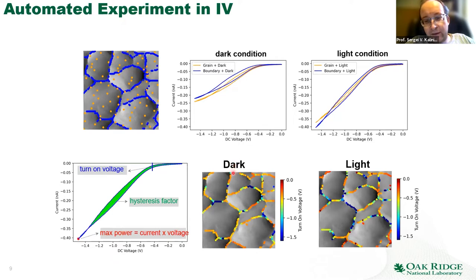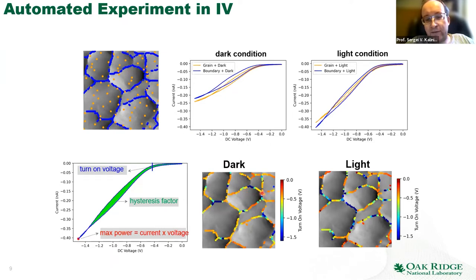Then we can see interesting things. If we look at quantities like turn-on voltage or hysteresis and plot their distribution across grain boundaries, we can see that grain boundaries are actually different. For example, this grain boundary has a strongly insulating region, while some grain boundaries actually have a conductive character. The interesting next step would be to correlate this further with TEM and TOF-SIMS measurements.